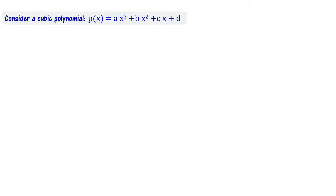In this video, we study the relationship between coefficients and zeros of the cubic polynomial. Let us consider a cubic polynomial P of x equal to ax cube plus bx square plus cx plus d. The degree of this polynomial is 3. This is a cubic polynomial.